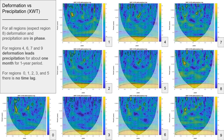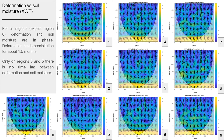Regarding precipitation, we can observe that for the majority of the regions, deformation and precipitation are in-phase. We highlight that over the agricultural regions 3 and 5, no time lag was observed. For the majority of the regions, deformation and soil moisture are found in-phase. For regions 3 and 5, no time lag was observed. However, for all the other regions, we have a time lag of about 1.5 months.